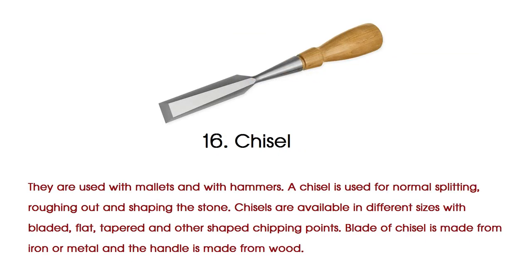Chisel is used with mallets and hammers. A chisel is used for normal splitting, roughing out and shaping the stone. Chisels are available in different sizes with bladed, flat, tapered and other shaped chipping points. The blade of the chisel is made from iron or metal and the handle is made from wood.